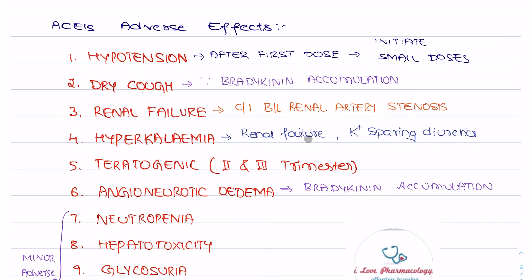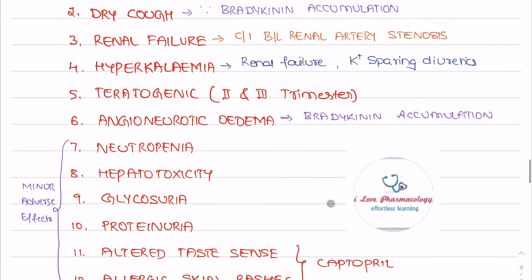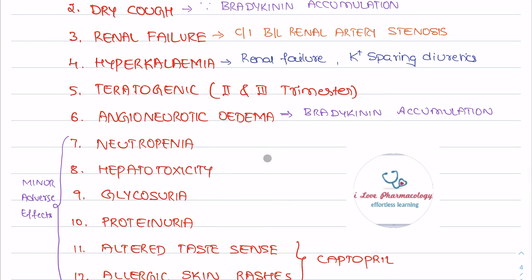Hyperkalemia can lead to renal failure, so ACE inhibitors should be avoided along with potassium-sparing diuretics or potassium supplementation. They can cause teratogenic effects, especially in the third trimester of pregnancy. They can cause angioneurotic edema due to accumulation of bradykinin. Minor reversible adverse effects include neutropenia, hepatotoxicity, glycosuria, proteinuria, altered taste sensation, and allergic skin rashes — the latter two most commonly seen with captopril.